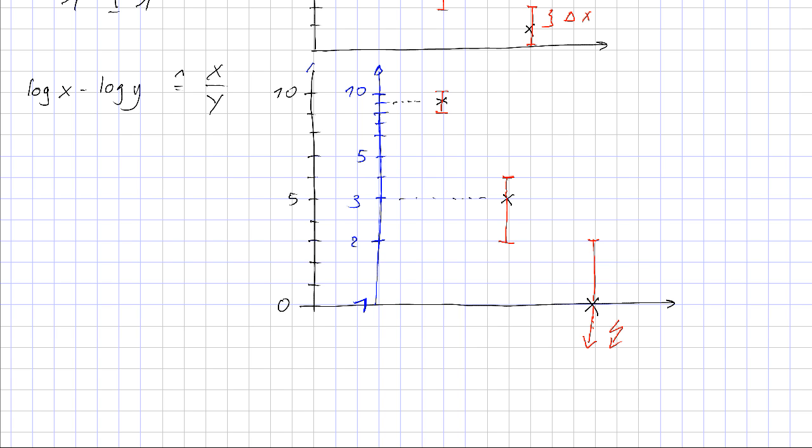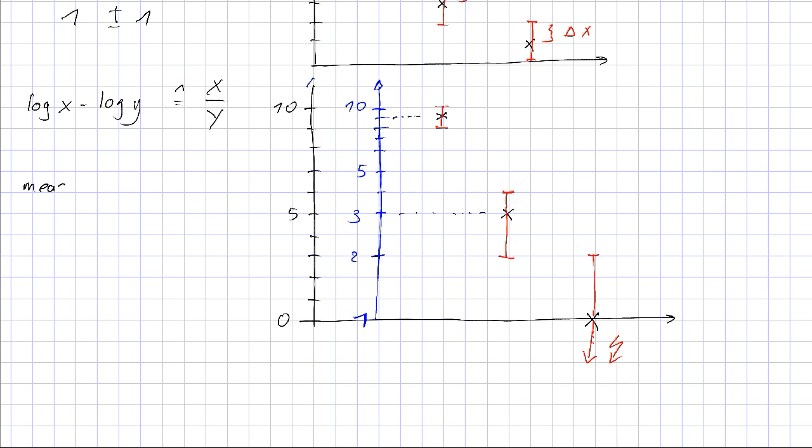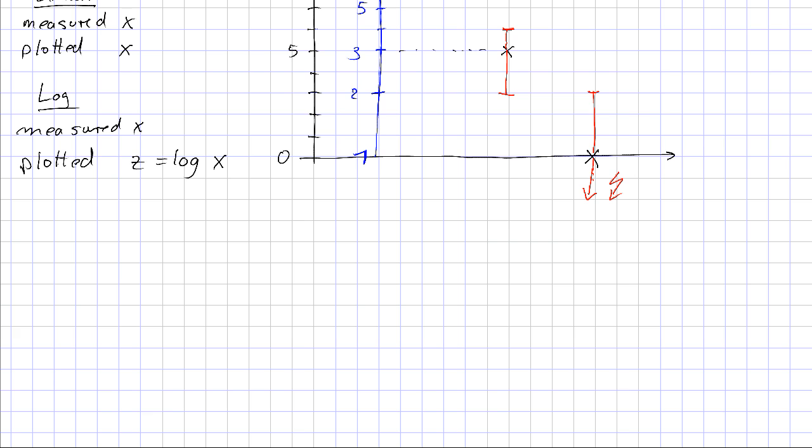So mathematically, on a linear scale we measured x and we plotted x. On a log scale, on a linear scale in the log scale we measured x, but we didn't plot x, we plotted something else. Let's call it c, which is log of x. Now if you want to draw error bars, we shouldn't draw delta x, but we should draw delta c, or delta of log x.